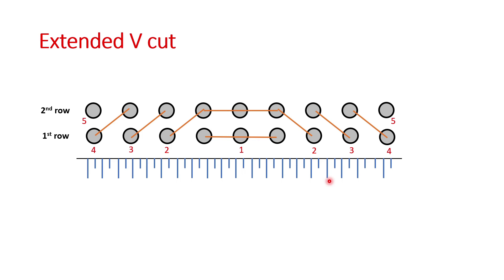Then, what is the extended V cut pattern? It is the V cut extended slightly. Three blast holes are blasted first, then the next one, then five, then four, then four, then two — forming an extended V shape. This is called the extended V cut pattern.